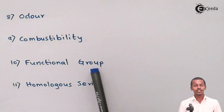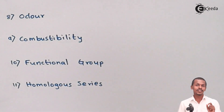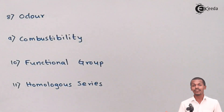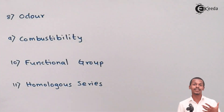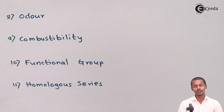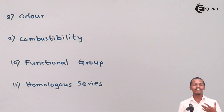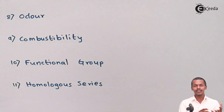Next is Functional Group. Functional groups play a very important role in differentiating organic compounds. For example, an alcohol and an ether can have the same molecular formula, but what distinguishes them in terms of chemical reactivity and physical properties is their functional group. An alcohol has a hydroxyl (-OH) group, while an ether has an oxygen atom bonded to two alkyl groups. The reactivity and physical properties of organic compounds are dependent on their functional group.